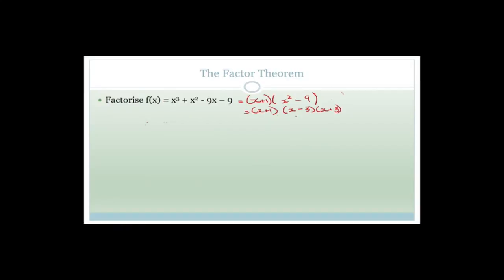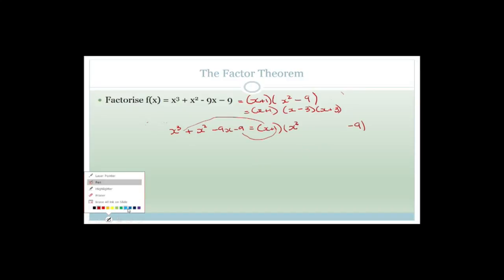Now let's talk about the bridge method. We have x³ + x² - 9x - 9 = (x + 1)(something). First goes into first: x goes into x³ gives x². Last goes into last gives -9. Normally you have a middle term of x, so you write plus kx, and we need to find a value for k.